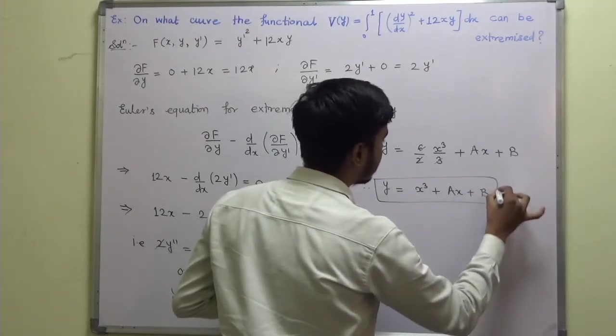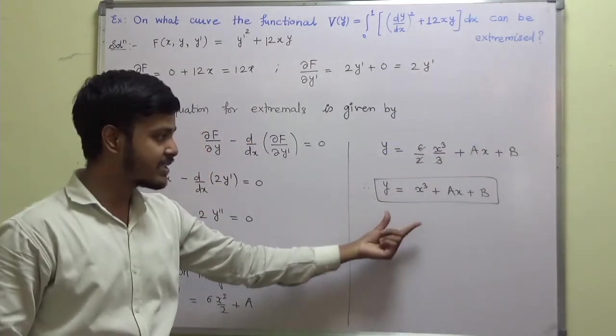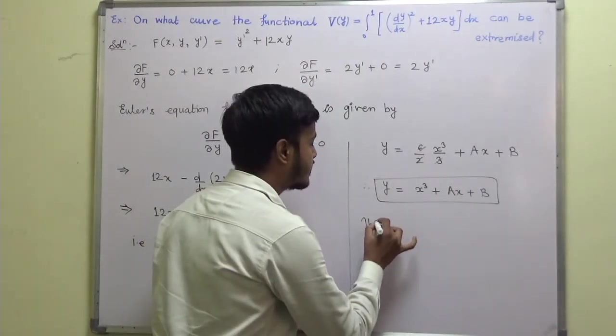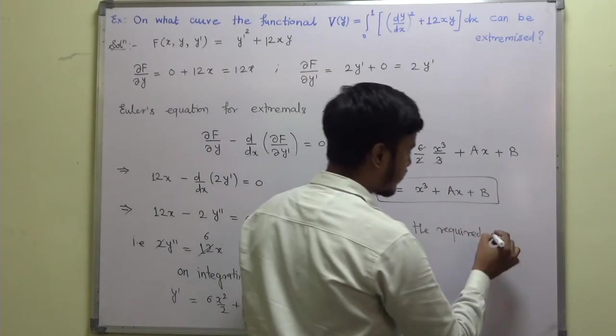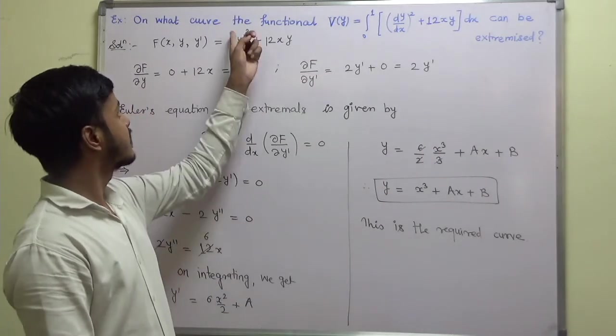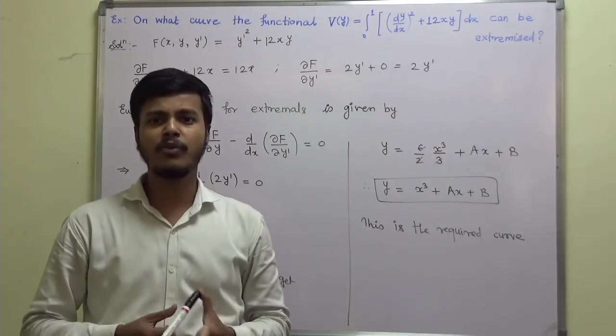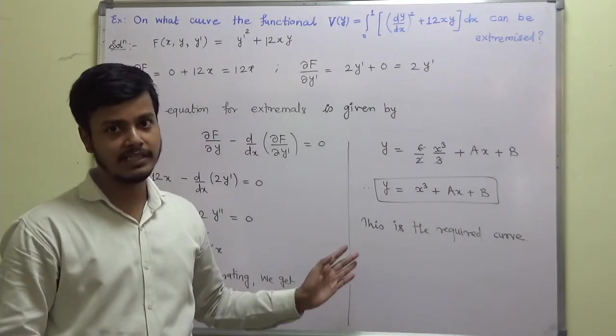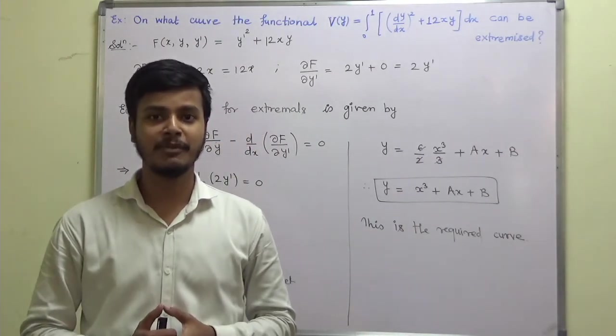So this is the curve on which the functional can be extremized. So this is the curve we wanted and this is the curve. So you can just write, this is the required curve on which the given functional can be extremized. So here we have solved one simple problem. Such type of problems will be there in the upcoming lectures. So we'll take the variety of problems after that. So I hope this is clear to you. So thank you for watching and enjoy learning mathematics. Thank you.